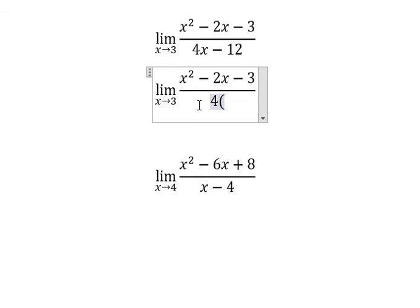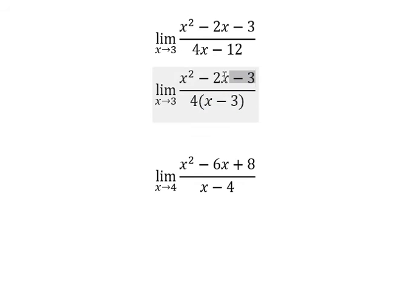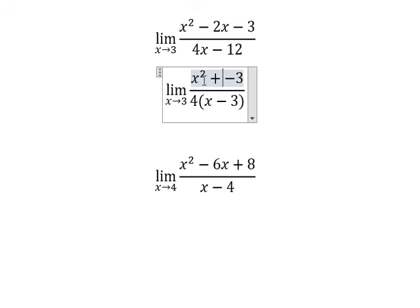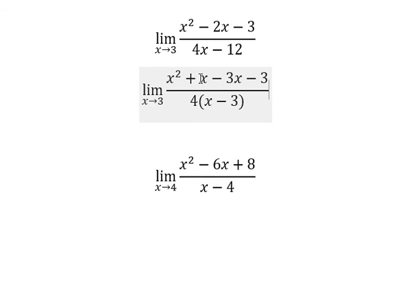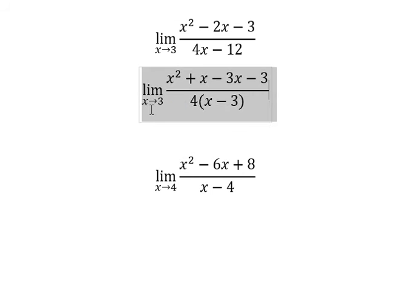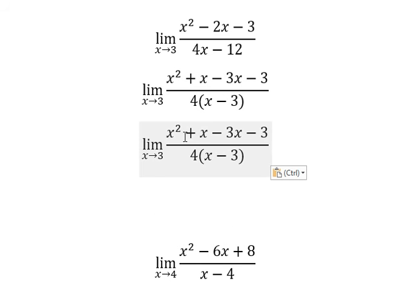So I will put number four, and that should be about x minus three. We need to do factorization of this one. I will put positive x minus three x, because x minus three x gives you negative two x. So x and x, where you can do factorization by x.